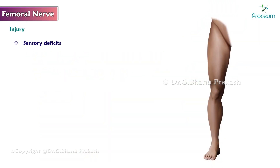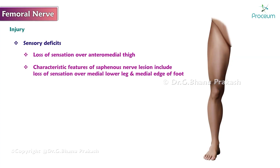Sensory deficits include loss of sensation over the anteromedial thigh. Characteristic features of saphenous nerve lesion include loss of sensation over the medial lower leg and medial edge of the foot.